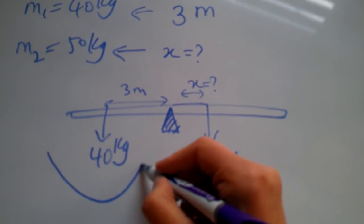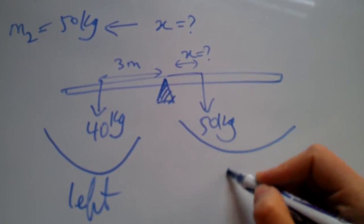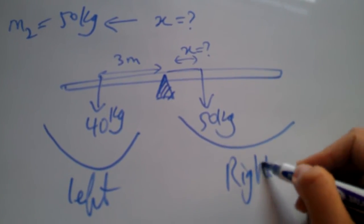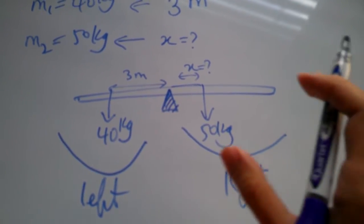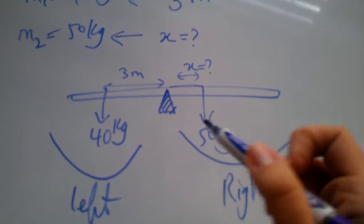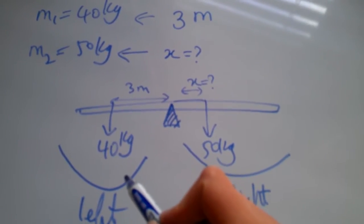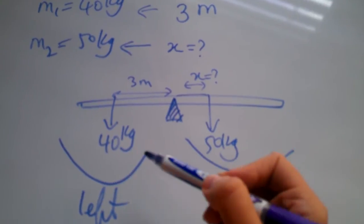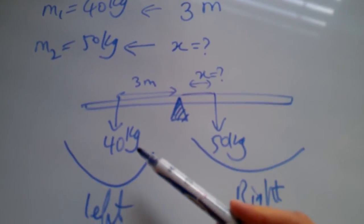That's what we mean by seesaw being balanced, right? It's not going to drop or fall either to the right or to the left. So in these questions, first and foremost you need to measure the torque that's on the left, you need to measure the force on the right and see how you can equate them.